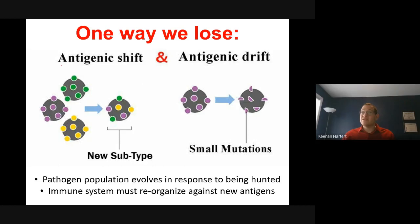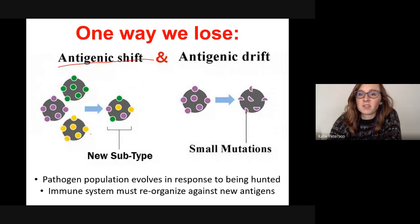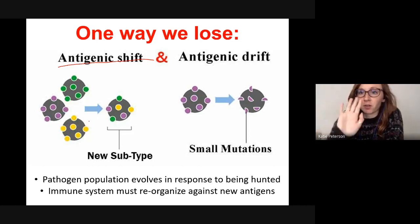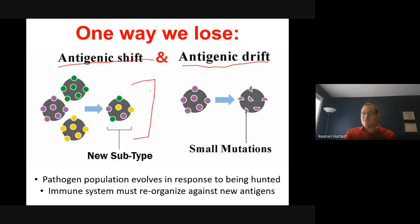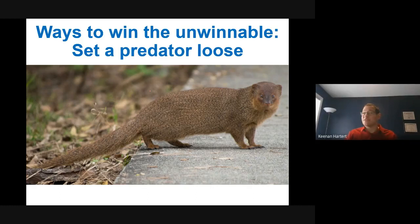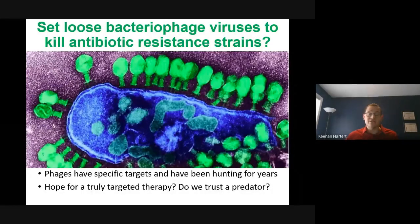One way immune systems can lose is through antigen shift or drift — sometimes the antigen initially presented gets reorganized or mutates, and your immune system can't mount a new response fast enough. Speaking of ecology, one way we can actually win this battle is to set predators loose — we can actually use viruses against bacteria, because antibiotics target pretty much everything, while viruses would target just a few things very specifically. They're very targeted to just one thing.